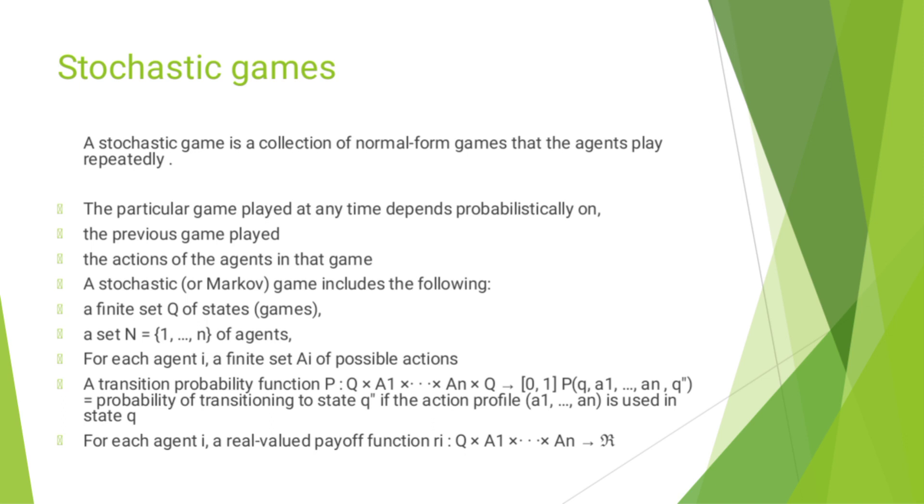The actions of the agents in that game is Stochastic. A Markov game includes the following: a finite set Q of states, a set N equal to 1 up to n of agents. For each agent i, a finite set Ai of possible actions.